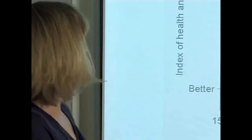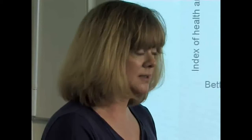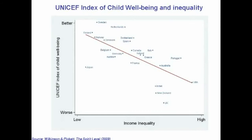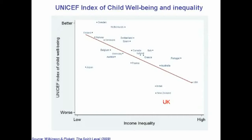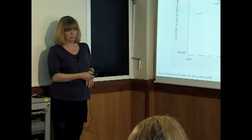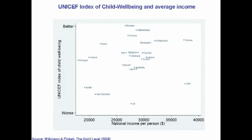Just in case you think it's not just the choice of places but also the choice of things we put in the index, we've done it again using somebody else's index — the UNICEF index of child well-being. That's an index UNICEF came up with to see how well kids are doing in different countries, containing 39 different factors: do they get on with their parents, do they get on with each other, how are they doing in school? We didn't choose what went into that one. Here it is in relation to income inequality — countries at the top doing better, countries at the bottom doing worse, with the UK doing worst of all. Again, a strong and close relationship. And when we put the same index in relation to national income per person, there's nothing — we're on that flat part of the plateau.